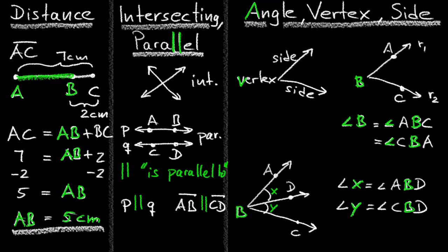In this example, more than two rays meet at B. So in this case, the vertex cannot be used to name an angle, like in this previous example.